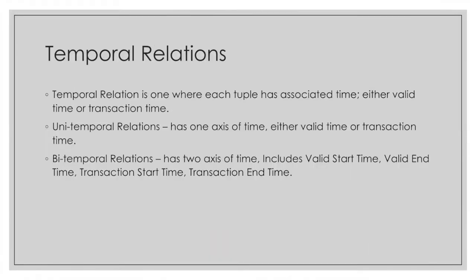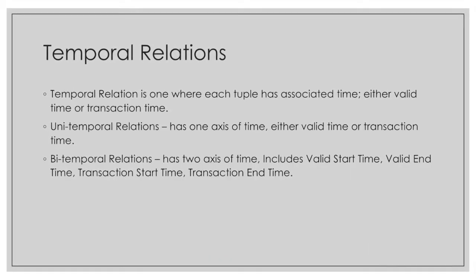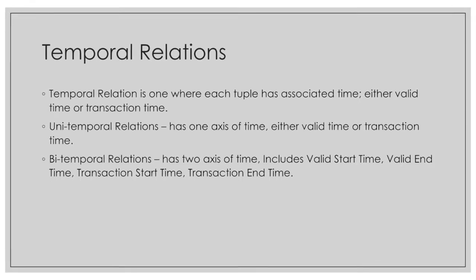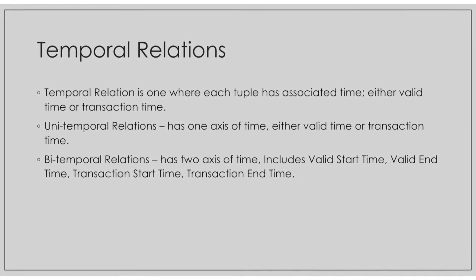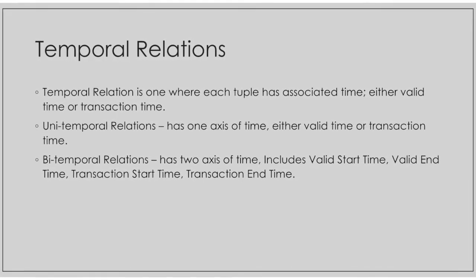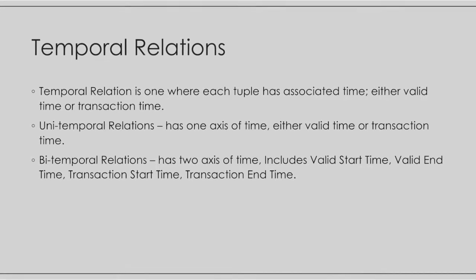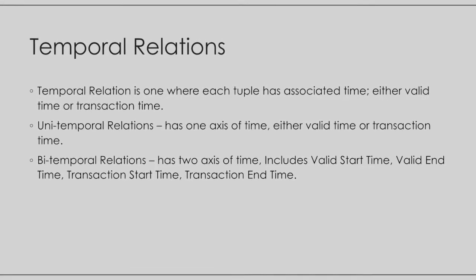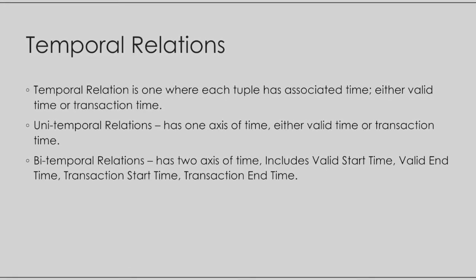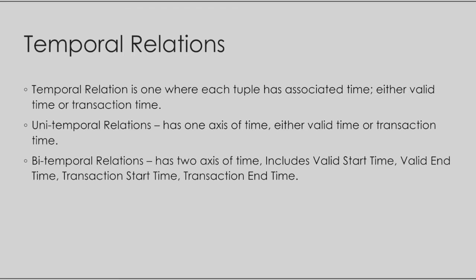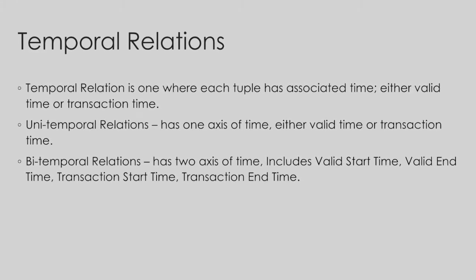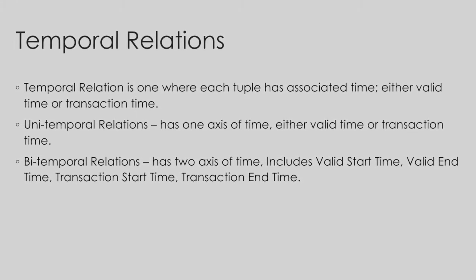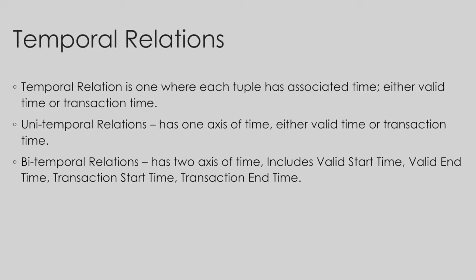Temporal databases have temporal relations where each tuple has either valid time or transaction time or both associated with it. If the relation has only one aspect of time, then it is called the unitemporal relation. And if it has both aspects of time associated, then it is called the bitemporal relation.